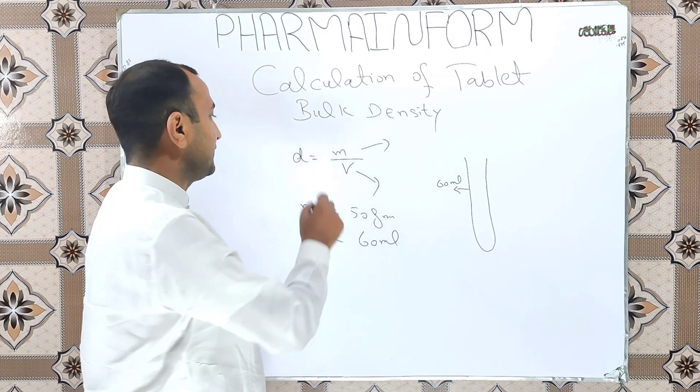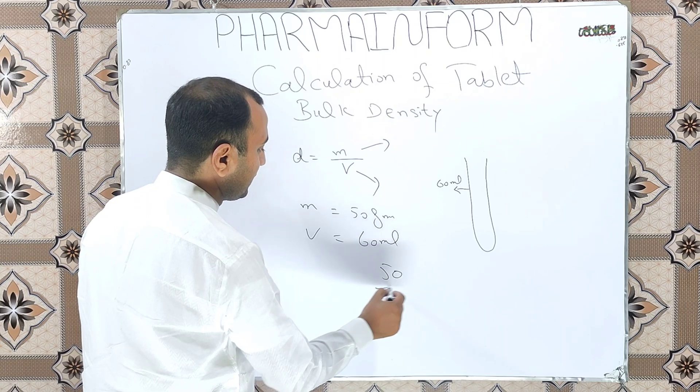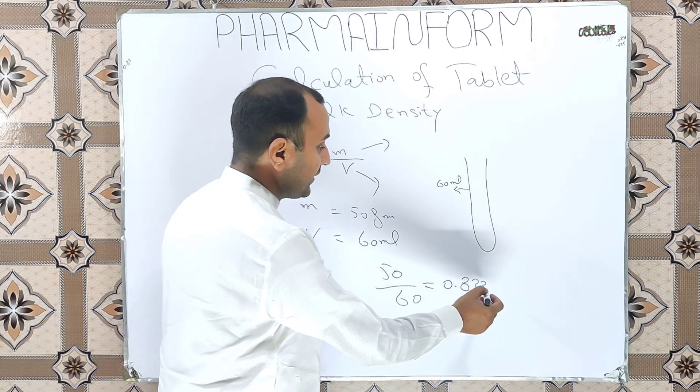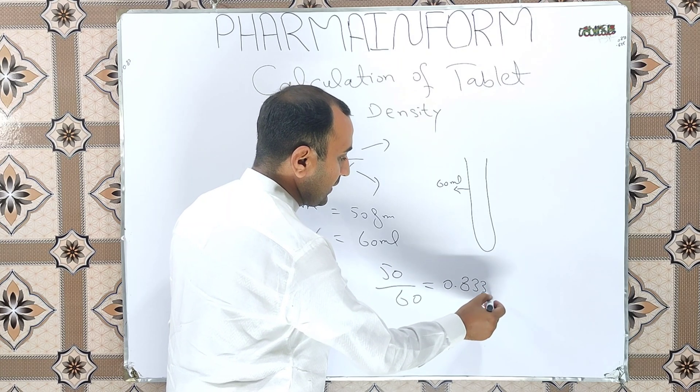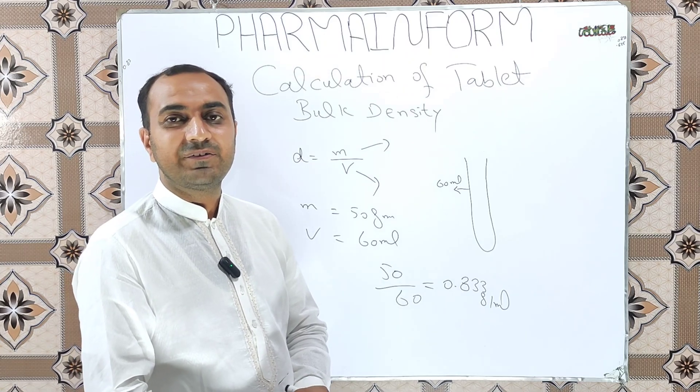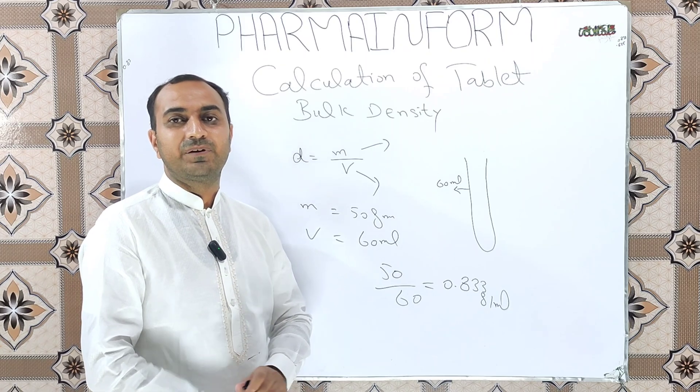We will calculate bulk density by the formula mass over volume: 50 over 60 equals 0.833 gram per ml. The bulk density of tablets is dependent on the weight of the tablet and the shape of the tablet.